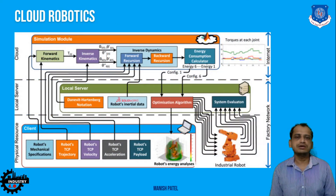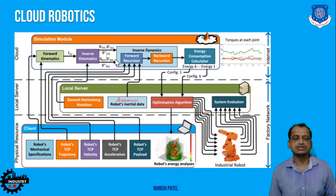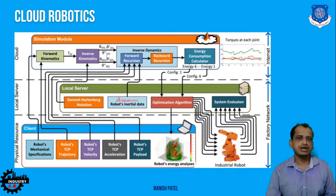Here is a simple application: an industrial robot's system evaluation criteria — DH parameters, joint angles, velocity, and acceleration profile — are fed to a local server from its physical resources. From there, data goes to the cloud, where forward and inverse kinematic analysis is performed. Based on this, smart algorithms for optimized energy consumption and performance are generated and fed directly back to the industrial robot so it can perform efficiently.